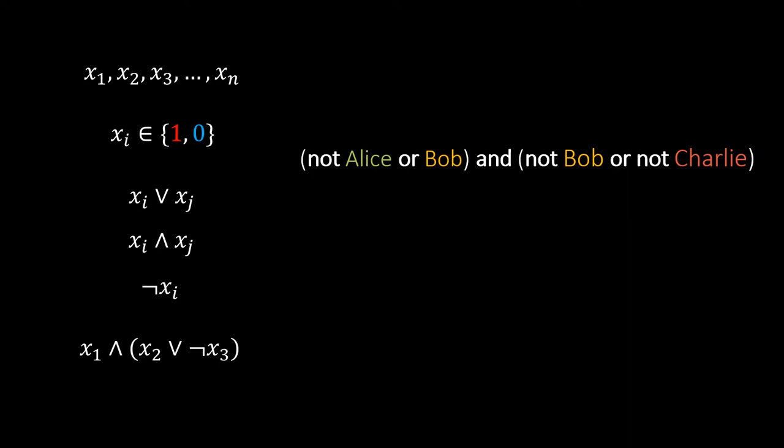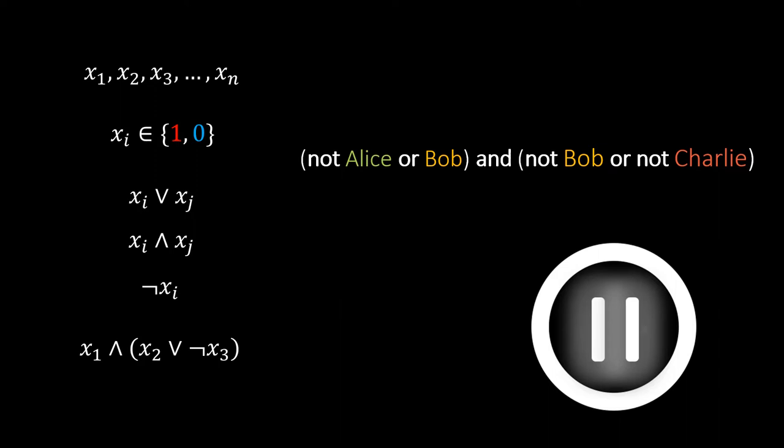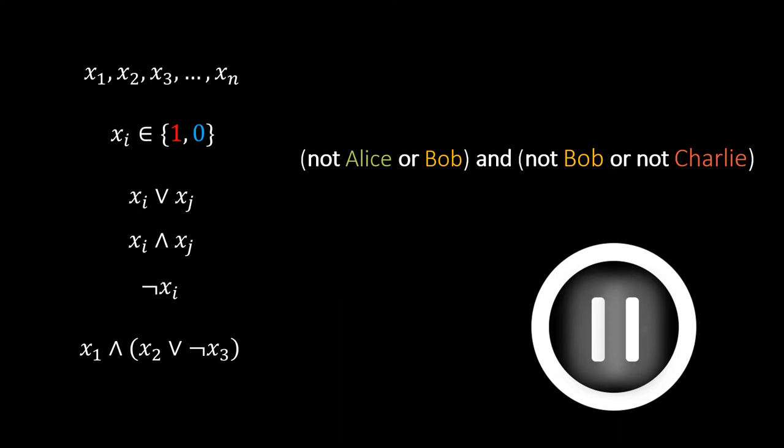Going back to our party example, pause the video right now to see if you can formulate the problem as a Boolean formula. Here, we use xa, xb, and xc to denote for each of our three subjects whether they come to the party or not.